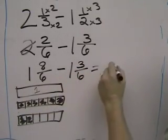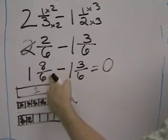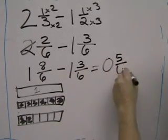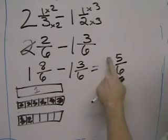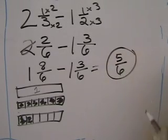1 minus 1 is 0. And 8 sixths minus 3 sixths is 5 sixths. And really, we don't need this 0 anymore. So the final answer is 5 sixths.